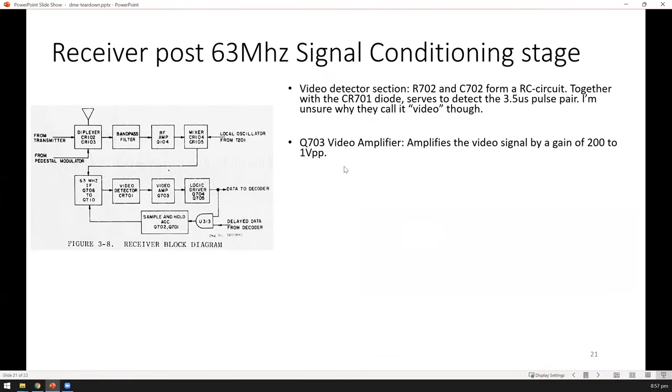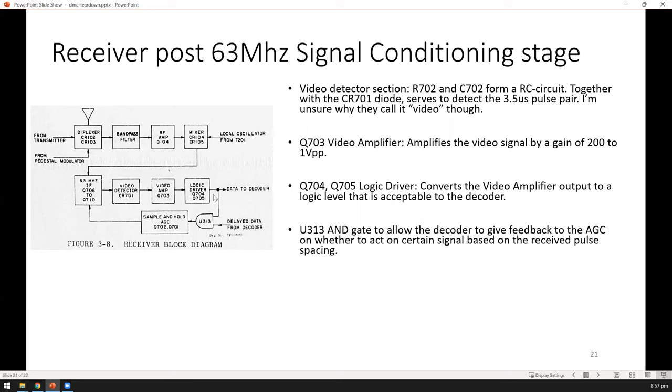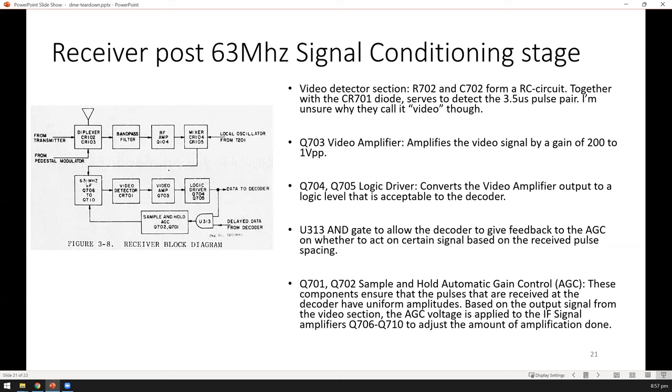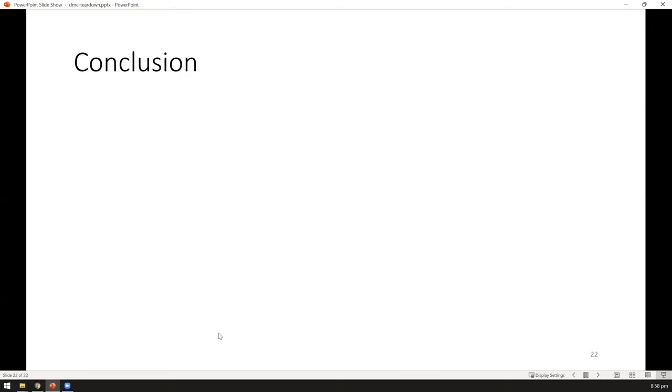Let me go through the other components. They have a bunch of amplifiers, a video detector, another amplifier, and a logic driver, as well as automatic gain control. The purpose of the video detector is to detect the 3.5 microsecond pulse pair. After that, they amplify the signal and convert it to a logic level because the data decoder is a normal IC. They need to ensure it's amplified to the correct level the decoder can use. Sometimes the amplitude can vary greatly, so they need a way to influence it. The decoder and signal both affect this amplifier, automatically adjusting the amplification to ensure the signal comes up at an appropriate level.